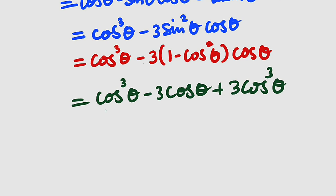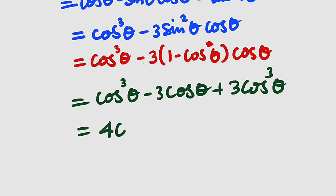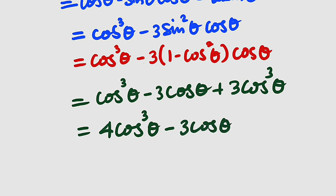We have cosine cubed theta plus 3 cosine cubed theta, making 4 cosine cubed theta. So this simplifies to 4 cosine cubed theta minus 3 cosine theta. We have finished simplifying cosine of 3 theta.